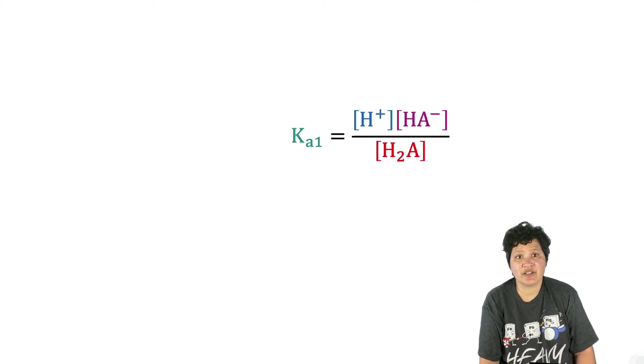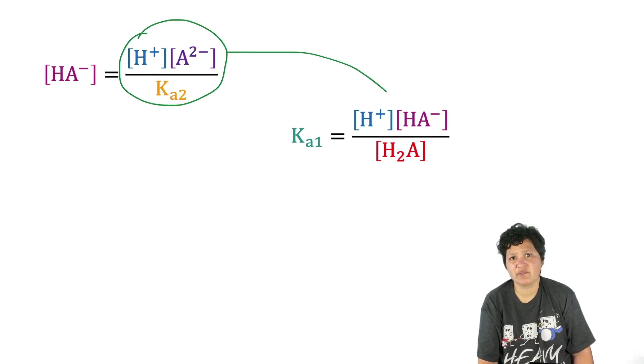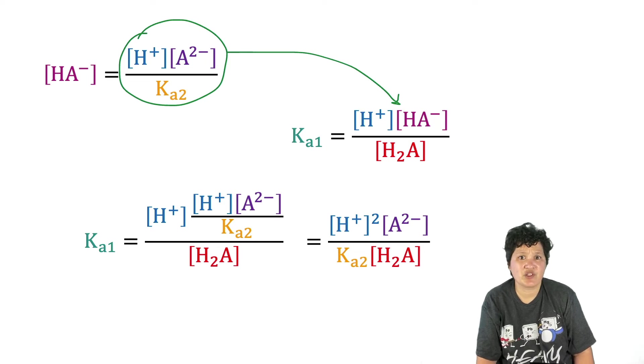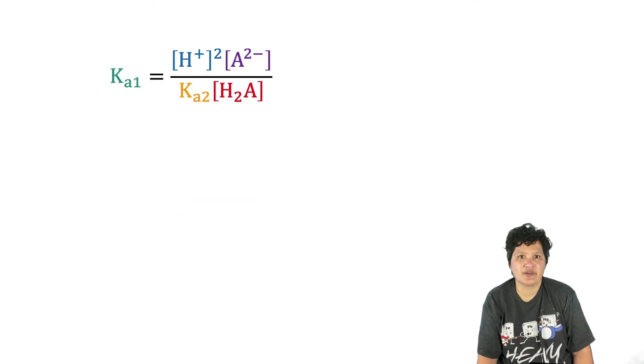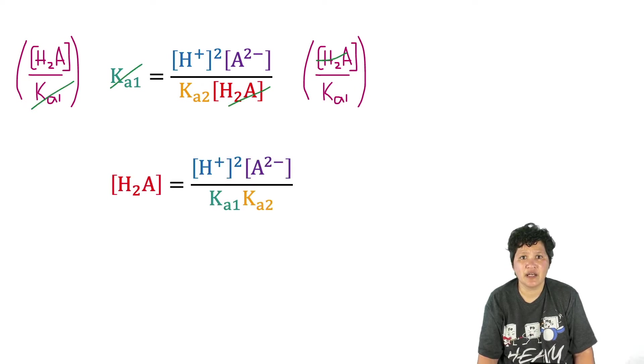Now we're going to take our expression for the first acid dissociation constant, Ka1. And we're going to take this expression that we just derived for the HA concentration and plug it in. At first we get something that looks really awkward, but if you simplify it, you get this. Ka1 equals H plus squared times A2 minus divided by Ka2 times H2A. So again, here's that expression that we just derived, and we're going to play with it just a bit more because we want to solve for the concentration of H2A. We'll do that by multiplying both sides by the concentration of H2A and dividing by Ka1, and we're left with this.